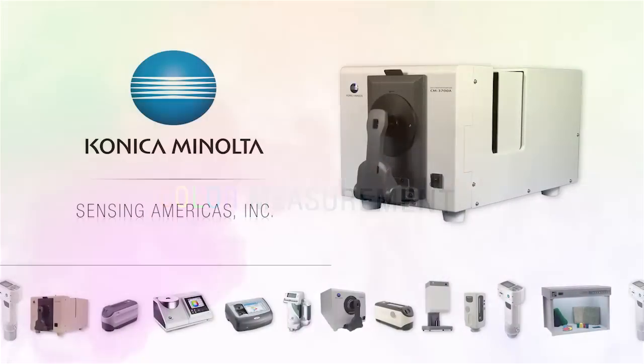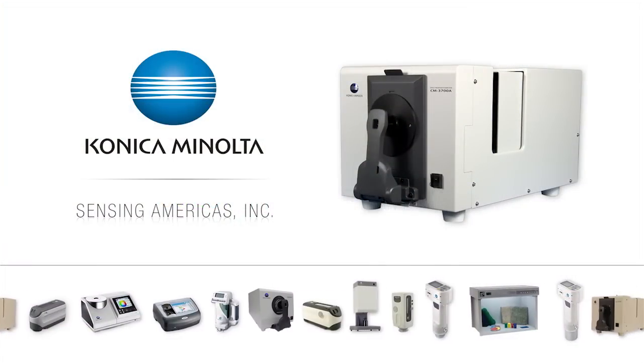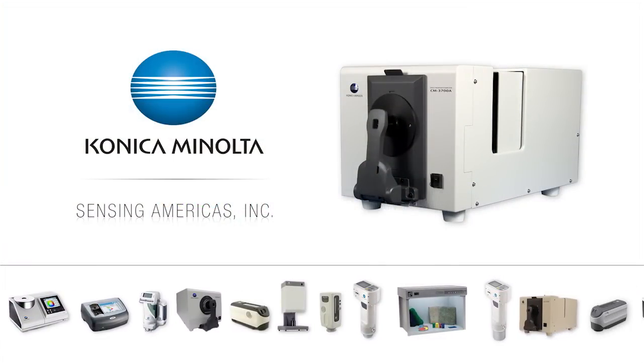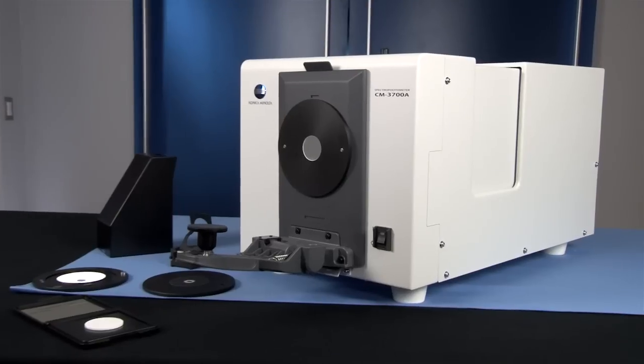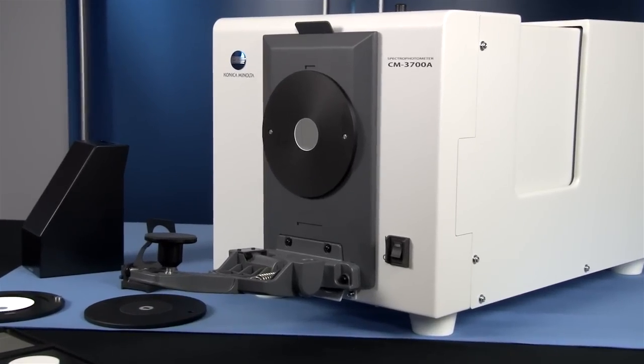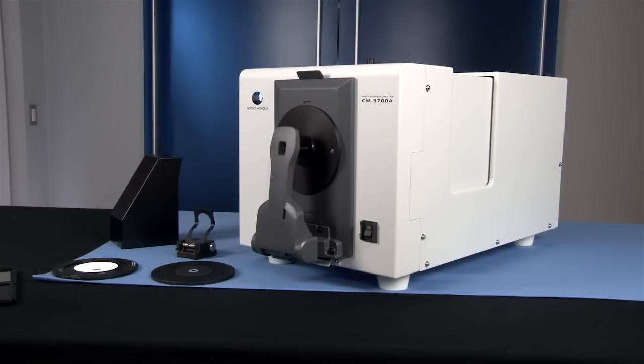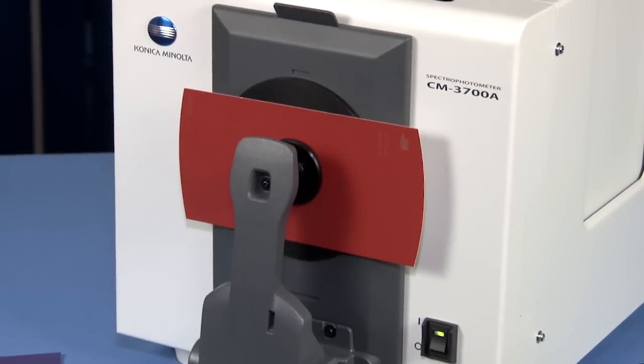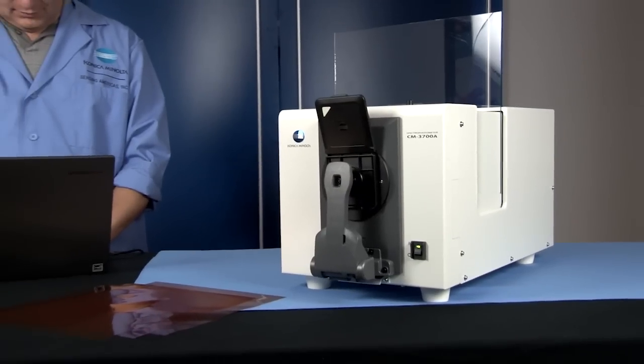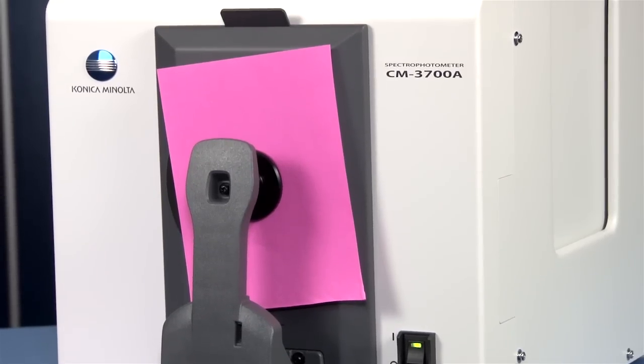For performance and reliability, Konica Minolta Sensing's CM3700A is a state-of-the-art benchtop spectrophotometer designed to evaluate the color and appearance of solid, translucent, transparent, and fluorescent samples small to large in size.